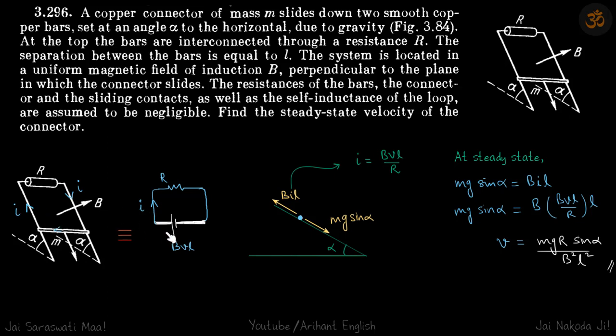Let's draw the equivalent diagram when it's sliding with velocity V. The equivalent EMF will be BVL, and current I will flow in the circuit. Because current I is flowing, this rod will have a force BIL upwards. That should equal the downward force Mg sin α at steady state.